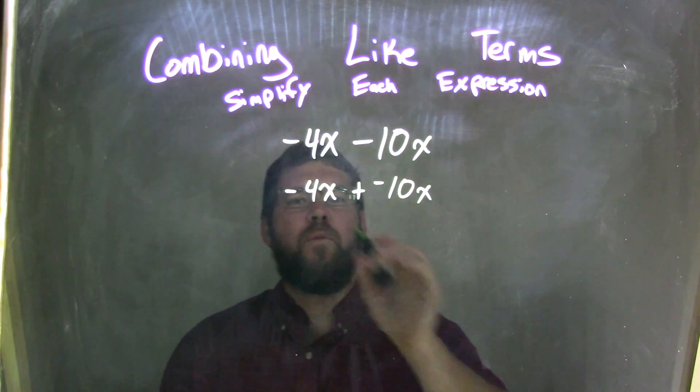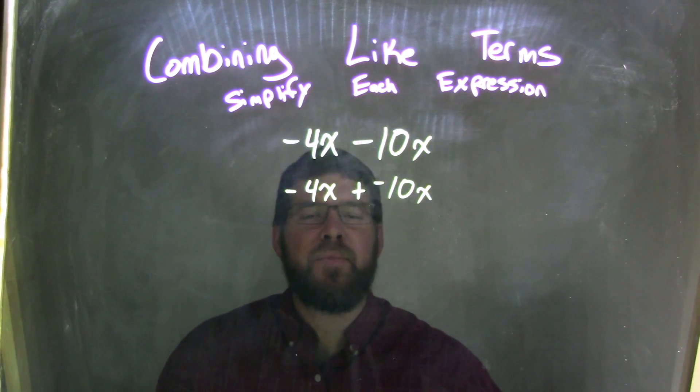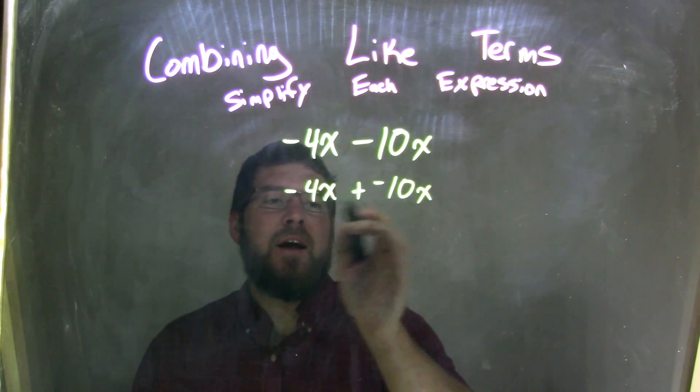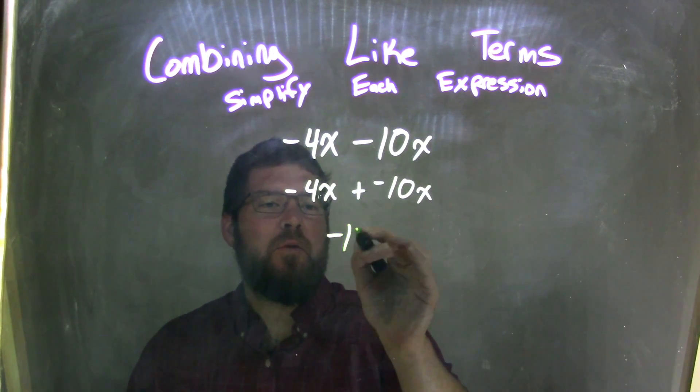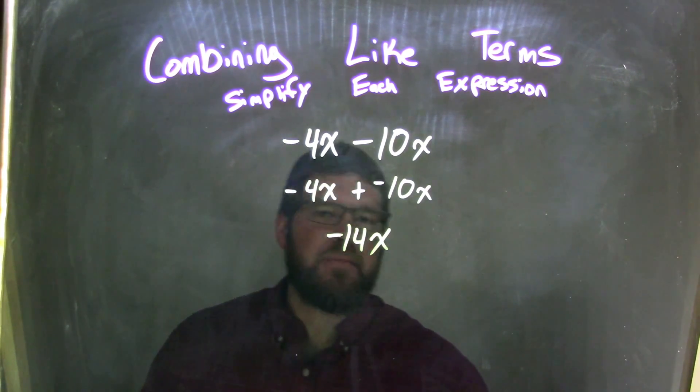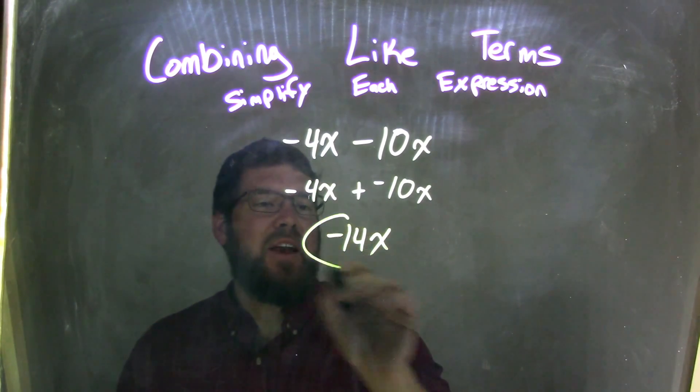Now this becomes pretty simple. Negative 4x and negative 10x are like terms, so we can combine them. Negative 4x plus negative 10x is more in that negative direction. It's negative 14x. And there's nothing else for me to combine, so that is our final answer.